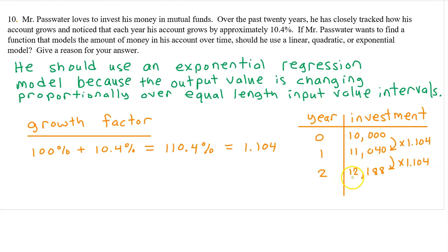To find the amount after two years, we would multiply by 1.104 again. Because the output values are increasing by repeated multiplication, we say that the output values are increasing proportionally. Specifically, this is the exponential model that would give the amount in Mr. Passwater's account after two years.